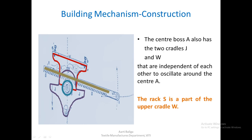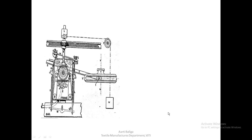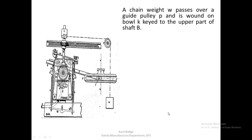The rack is a part of cradle W. We also see a chain weight W that passes over a guide pulley P and is wound on a bowl K. This is keyed to the upper part of upright shaft B. One can see the connection at K using this chain, which passes over pulley P, with a weight W attached at the bottom.